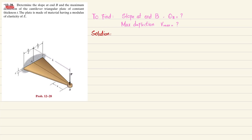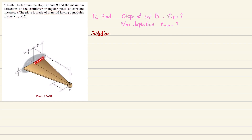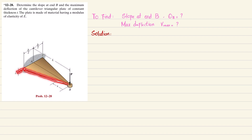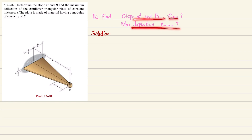Welcome back. Problem 12-28: determine the slope at end B and maximum deflection of a cantilever triangular plate of constant thickness. The plate is made of material having modulus of elasticity E. This is a cantilever triangular beam subjected to a point load P at the end. The thickness is constant throughout the length.